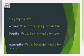Now let's talk about the be going to form. Affirmative: verb to be + going to + base form. Negative: verb to be + not + going to + base form. Interrogative: verb to be + subject + going to + base form. We will look at more examples.